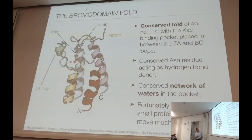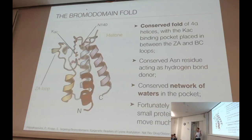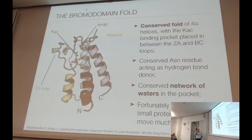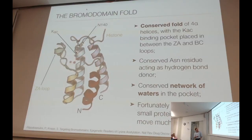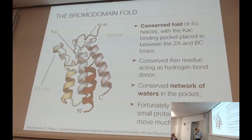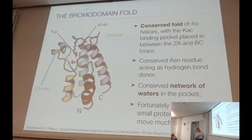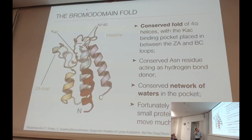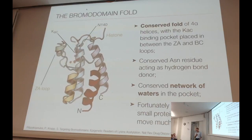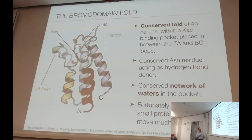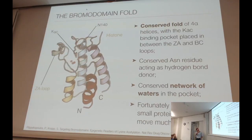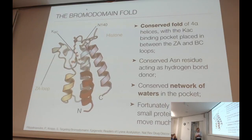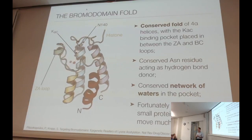This is what they kind of look like. They're a small sort of four-helix bundle, and you can see there's a little pocket at the top where the histone comes in — this is where you recognize the natural binding partner, which is this acetylated lysine. This is a conserved fold across all the bromodomains, and this asparagine is key in recognizing the acetylated lysine; it's almost 100% conserved. There's also a nice conserved network of water molecules in the bottom of the pocket, which have received a lot of attention in the context of drug design.